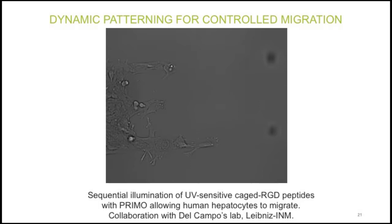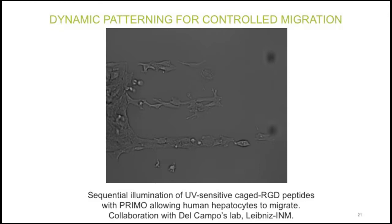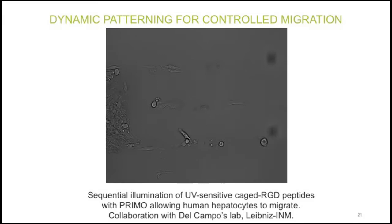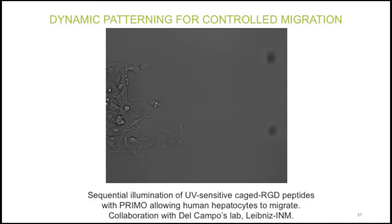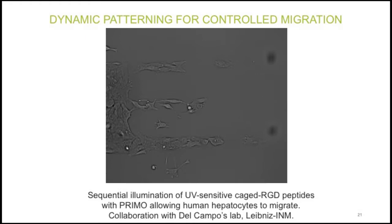Another major advantage of this technique is that it can be used sequentially — light can be projected in the presence of living cells. In this example, a first micropattern confines cells on a rectangle. Afterwards, UV light releases caged RGD peptides so cells can attach in newly exposed regions. The video shows lines exposed in the presence of living cells, enabling active control of live cell migration.